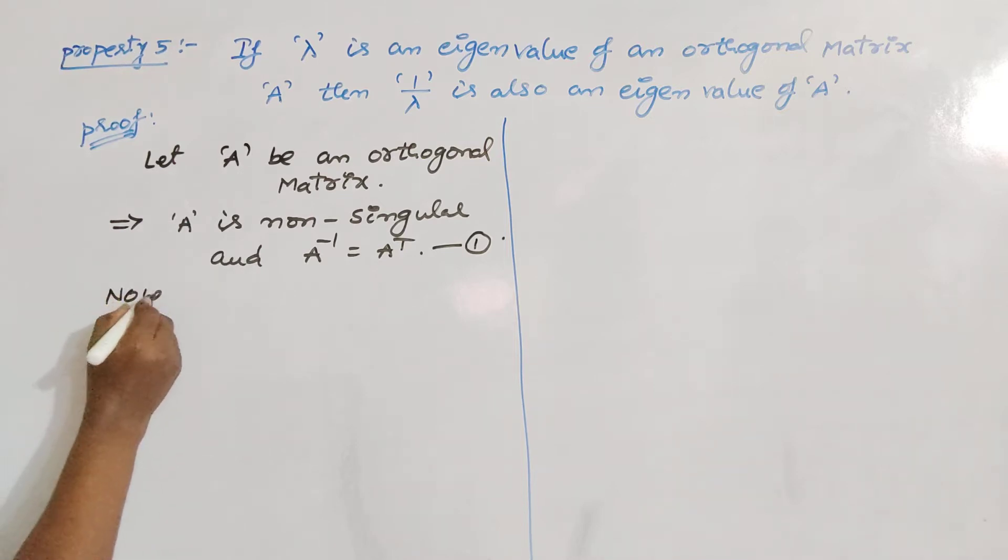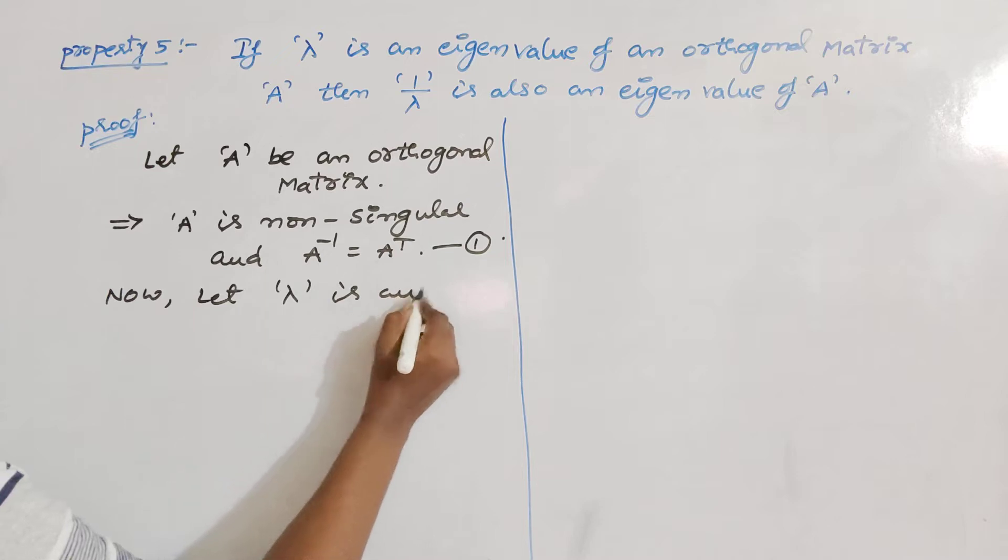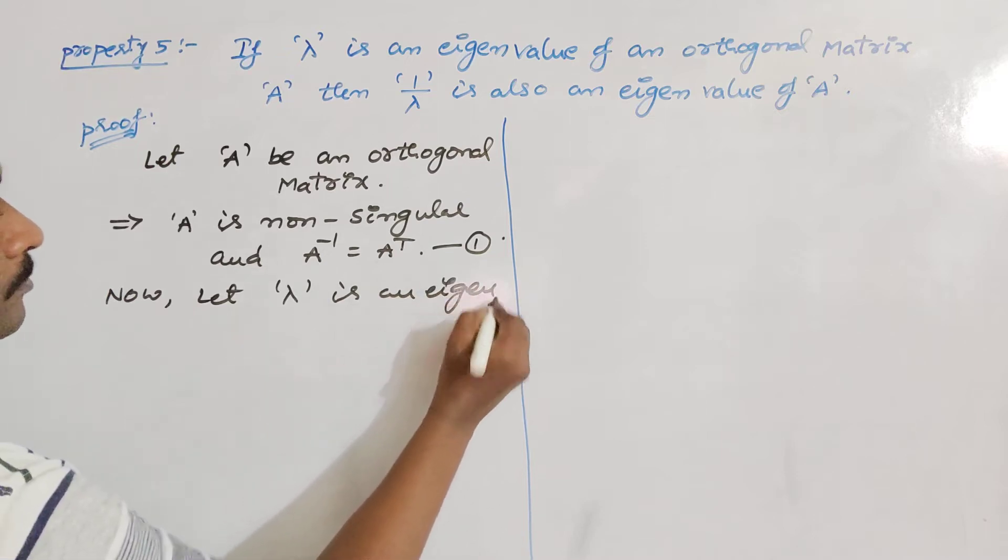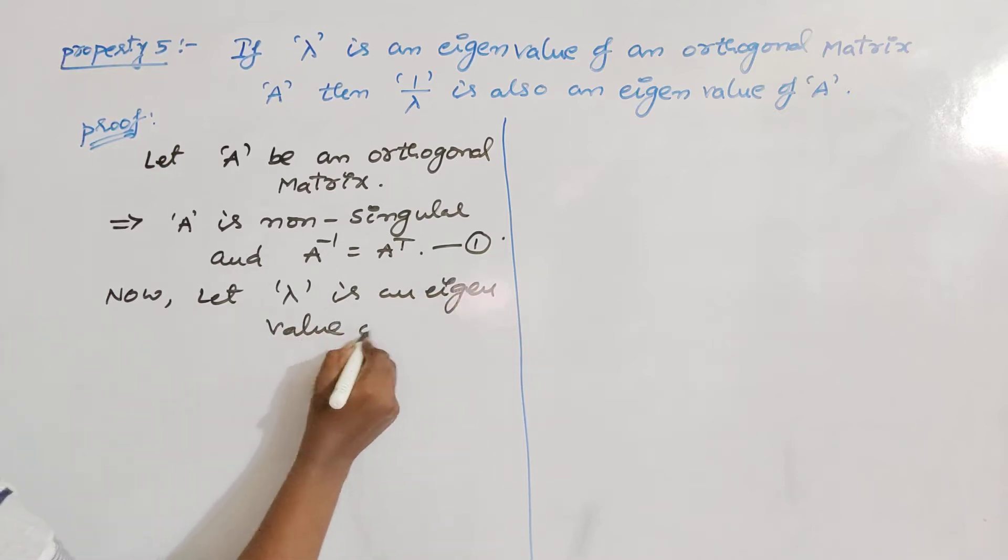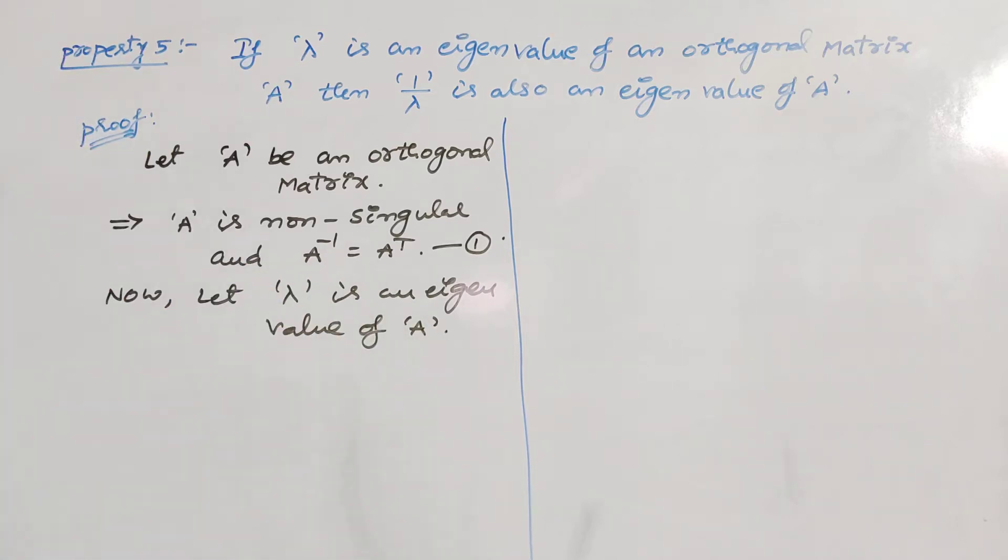Now, let lambda be an eigenvalue of A. Then 1 by lambda, from the previous properties, 1 by lambda becomes eigenvalue of A inverse.